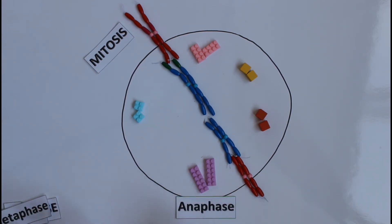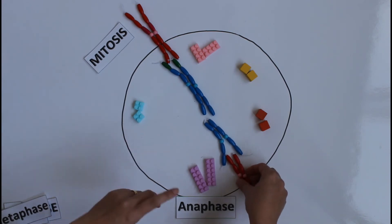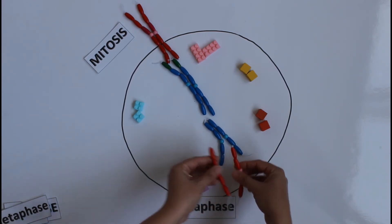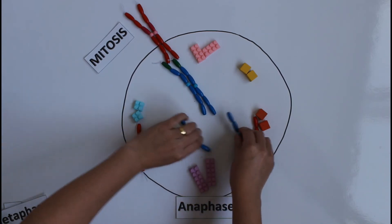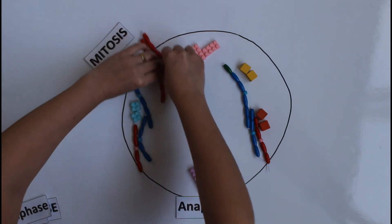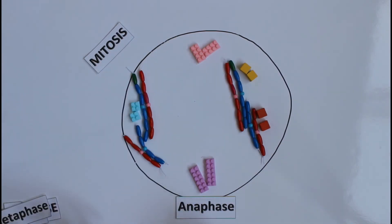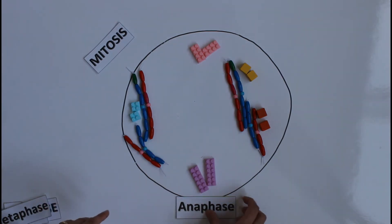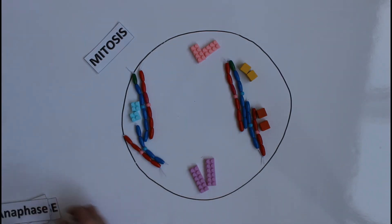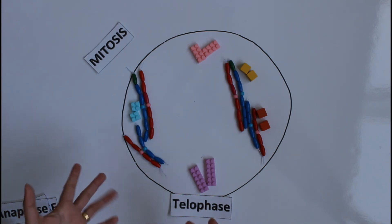After metaphase comes anaphase. In biology, anaphase means separation. What's going to separate? The sister chromatids. Each chromatid goes to one side of the cell — they separate and move to opposite sides.